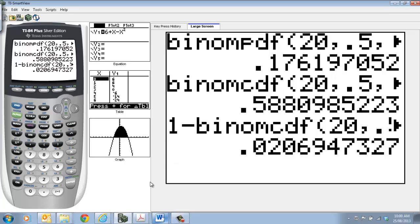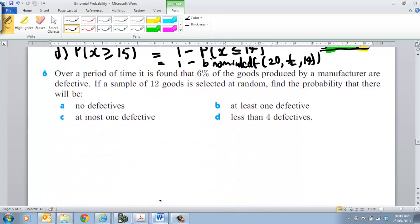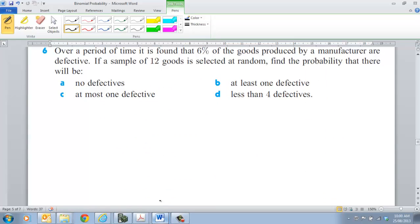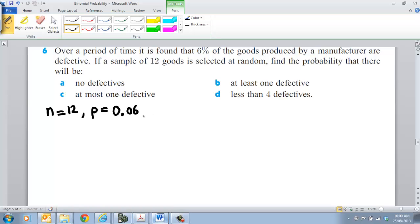I think those questions are pretty easy. I don't think you should have too many problems with those, but there's a range of questions that you'd need to do in a test situation. Now coming down to the second example, similar sort of question. Over a period of time, it's found that 6% of goods produced by a manufacturer are defective. If a sample of 12 goods is randomly selected. So again, as I said before, we should write down N. So N is 12 goods. We should write down our P value. Our P value is equal to 0.06. So therefore that means our Q value, if we're doing it the old fashioned way, is equal to 0.94.